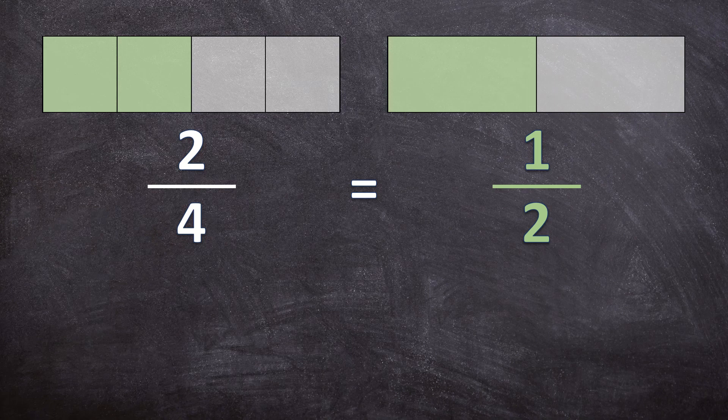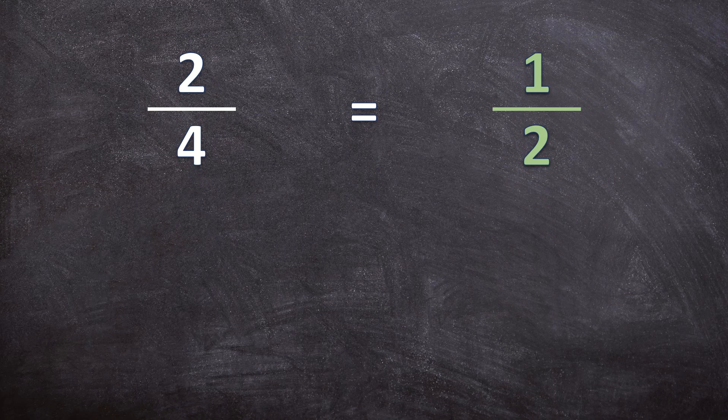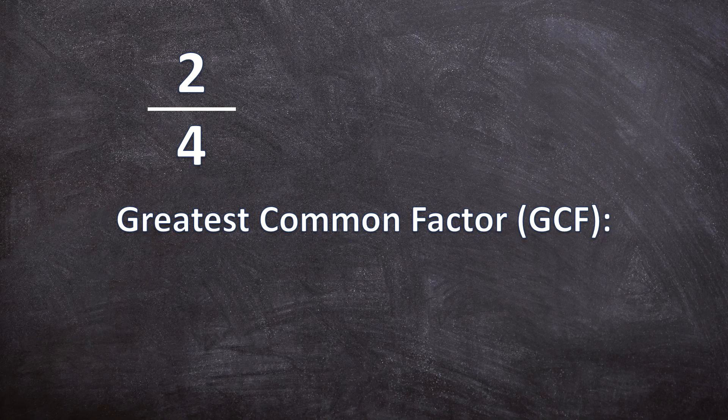But let's say we don't have the shapes to help us. How can we take two over four and simplify it so it becomes one over two? Let's have a look. The first thing you'll do is get the greatest common factor for the numerator and the denominator. So let's write down the factors for the numerator and the denominator.